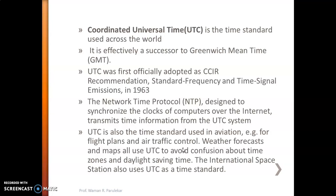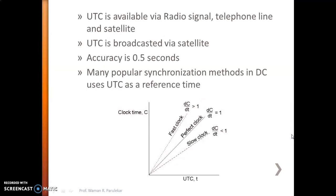Another application is the International Space Station, which also uses UTC. Many popular synchronization methods in distributed computing use UTC as a reference time. The accuracy is 0.5 seconds. To get UTC, there are different methods: one is radio signal, second is a telephone line, and it is also broadcasted through satellite. You can use satellite to get the UTC so that you can synchronize the clock of your own computer with UTC.